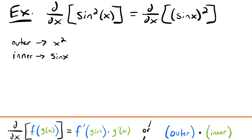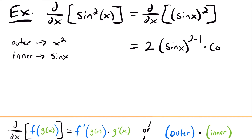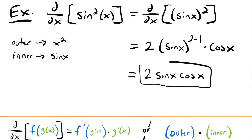Using the chain rule, we take the derivative of the outer function x squared by bringing down the exponent 2 and keeping the inner function sine x unchanged, giving 2 times sine x to the first power. Then we multiply by the derivative of the inner function sine x, which is cosine x. So the derivative of sine squared x is 2 times sine x times cosine x.